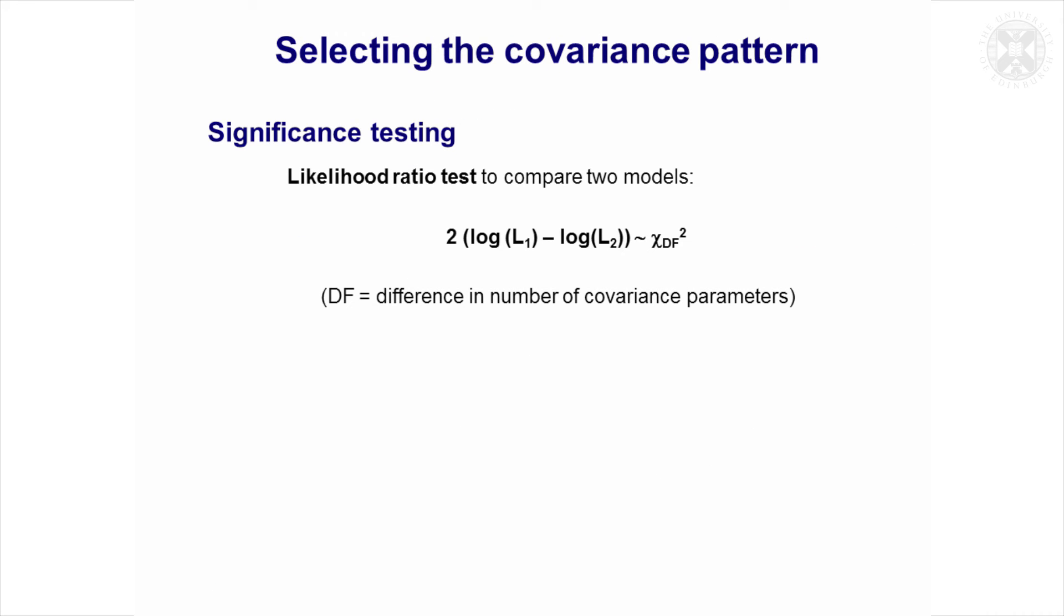So you might think, well there's all these different covariance patterns, how do I know which one to use? There are various approaches to this. The approach I like to take is to choose a very simple model and then to use significance testing to see if more complex covariance patterns have made a significant improvement.